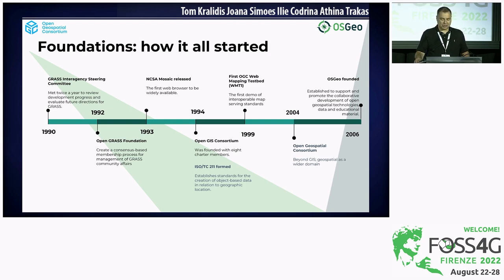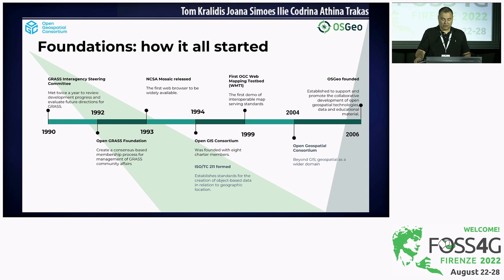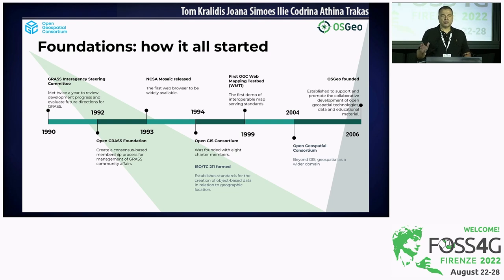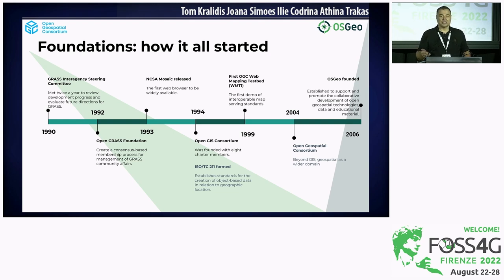It started with GRASS in the 90s and the Open GRASS Foundation, and NCSA Mosaic. The OGC and ISO TC 211 were both formed in 1994. In 1999 we had the first OGC web mapping testbed in Maryland, which featured the first live demo of interoperable web maps. In 2004, the Open GIS Consortium became the Open Geospatial Consortium — no longer just about GIS but geospatial as a wider domain. And in 2006, OSGEO was founded.